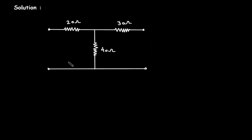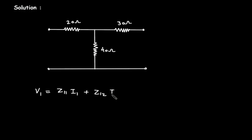First, we will write the equation for Z-parameter. The equation for Z-parameter is: V1 is equal to z11·I1 plus z12·I2, and V2 is equal to z21·I1 plus z22·I2.